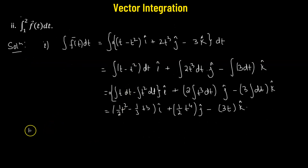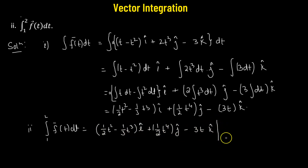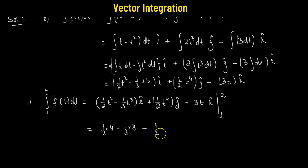Now let's find the definite integral with lower limit 1 and upper limit 2. We have the integral from 1 to 2 of f(t) dt. We calculate the value of this vector at the endpoints 1 and 2. For the i-cap component, evaluating the upper limit: (1/2) times 2 squared equals (1/2)(4), minus (1/3) times 2 cubed equals (1/3)(8). Then minus the lower limit: (1/2) times 1 squared, which is simply 1/2, plus (1/3) times 1 cubed, which is 1/3.